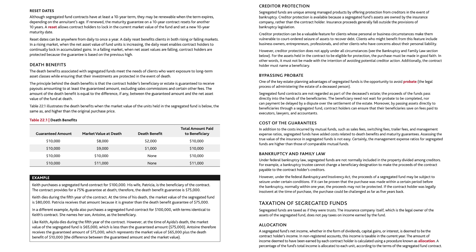Death benefits. The death benefits associated with segregated funds meet the needs of clients who want exposure to long-term asset classes while ensuring that their investments are protected in the event of death. The principle is that the contract holder's beneficiary or estate is guaranteed to receive payouts amounting to at least the guaranteed amount, excluding sales commissions and certain other fees. The amount of the death benefit is equal to the difference, if any, between the guaranteed amount and the net asset value of the fund at death. Table 22.1 illustrates the death benefits when the market value of the units held in the segregated fund is below, the same as, and higher than the original purchase price. With a guaranteed amount of $10,000, if the market value at death is $8,000, the death benefit is $2,000 and the total amount paid is $10,000.